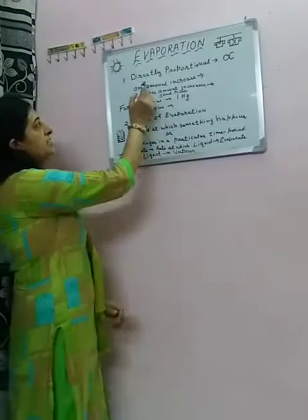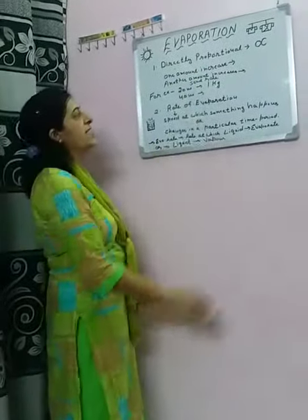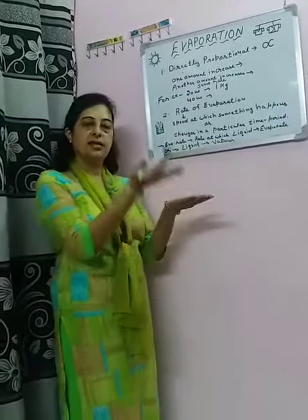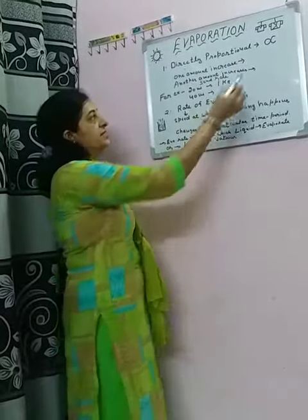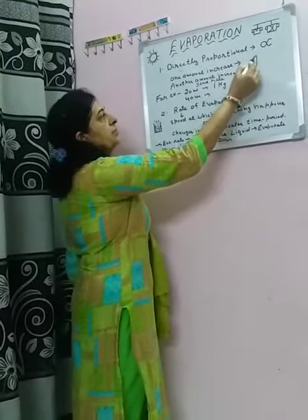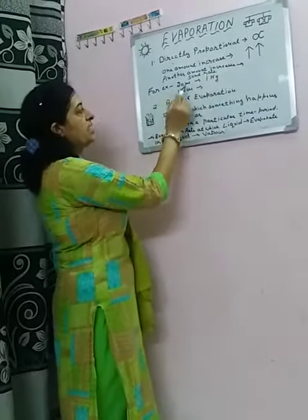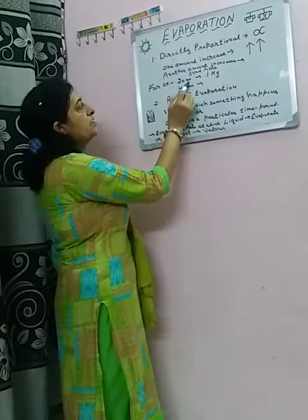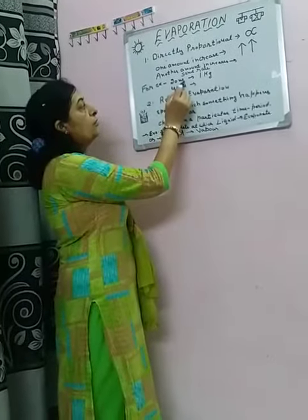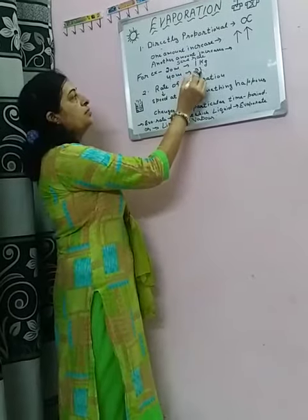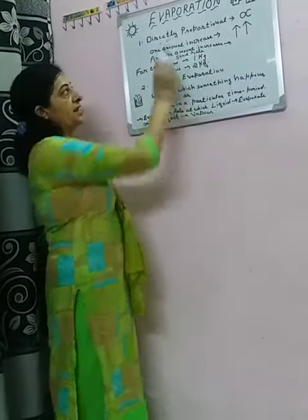The first one is directly proportional. Directly proportional means as one amount increases, another amount also increases at the same rate. For example, if 20 meters of rope weighed 1 kg, then 40 meters of that rope will weigh 2 kg. So this is an example of directly proportional.